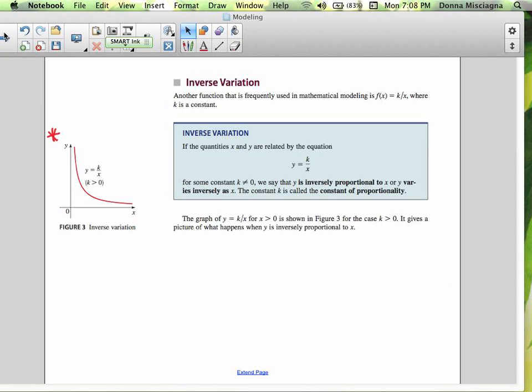Alright, so if you're told that two quantities vary inversely, this is the formula that you would use. The graph of y equals k divided by x for x greater than zero is shown in Figure 3 for the case where k is also greater than zero. It gives a picture of what's happening when y is inversely proportional to x and that's our diagram Figure 3 there.